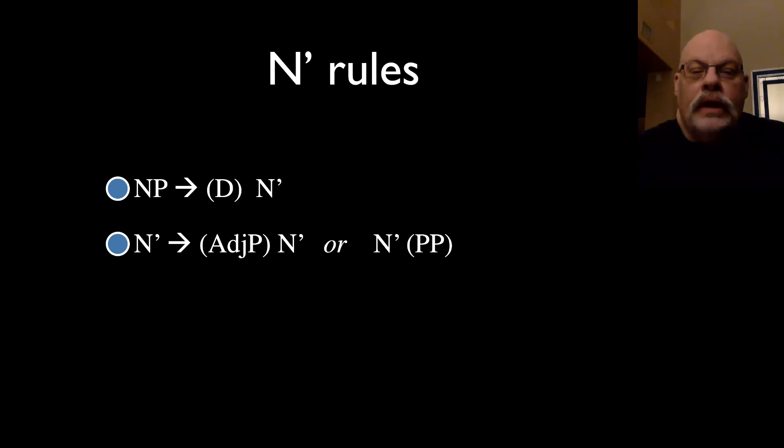And then we have a rule that lets you attach adjective phrases and prepositional phrases in. So it says N bar consists of an adjective phrase, an optional adjective phrase followed by an N bar, or an N bar followed by a prepositional phrase. And then we have a final rule which introduces the head noun, which says N bar consists of an N followed by an optional prepositional phrase. These three rules taken together will allow us to draw that tree that we just looked at.